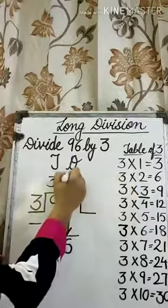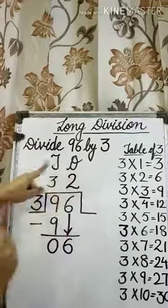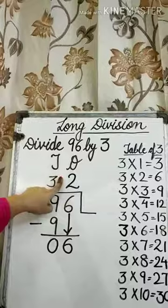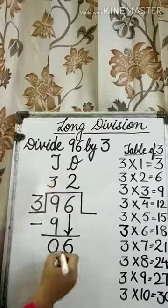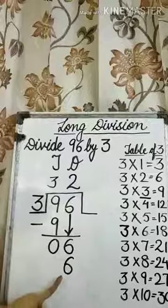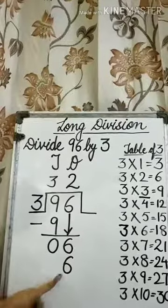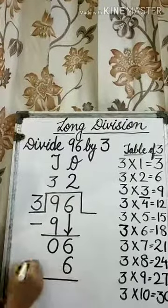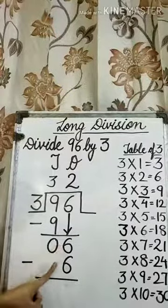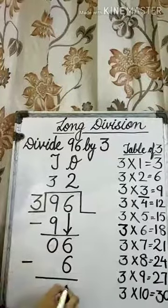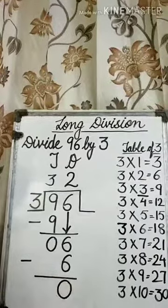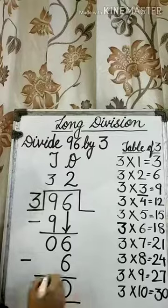So, write 2 in the 1s place of the question and 6 below the dividend in the 1s place. Now, we need to subtract. 6 minus 6 is equal to 0.